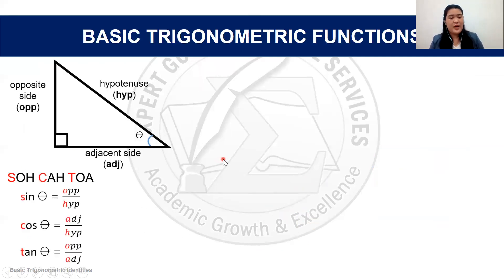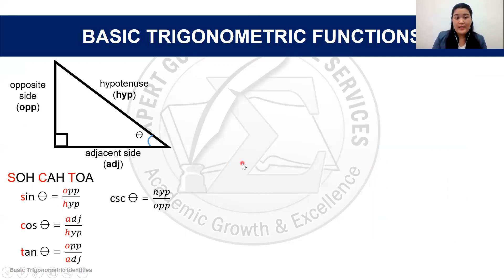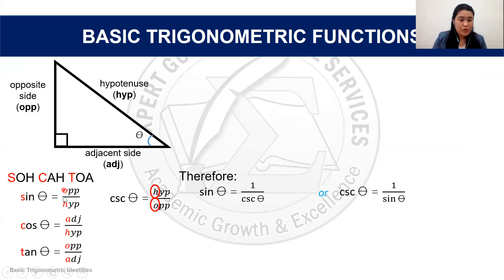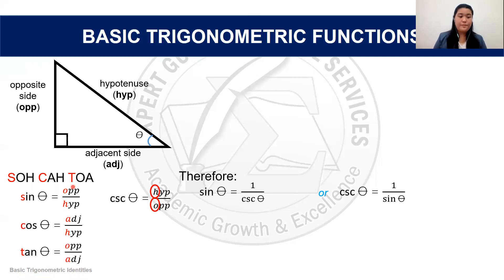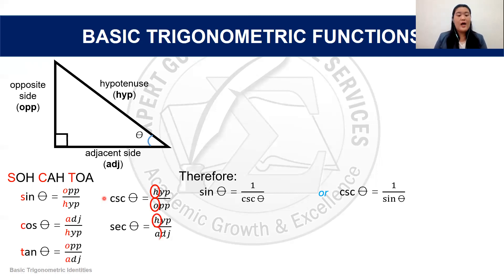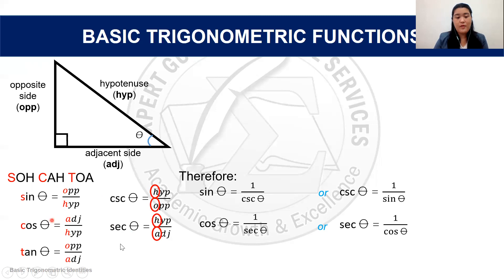Now let's look at the other three trigonometric functions. Cosecant theta equals hypotenuse over opposite side — note that this is the opposite of sine (O/H), so sine and cosecant are reciprocals: sine = 1/cosecant, and cosecant = 1/sine. Secant theta equals hypotenuse over adjacent side, which is the opposite of cosine (A/H), so secant and cosine are reciprocals: cosine = 1/secant, and secant = 1/cosine.